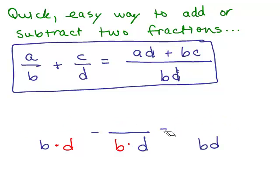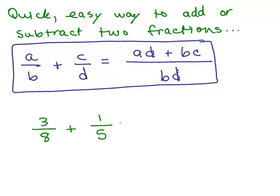So let's look at an example. Let's say you had 3 eighths plus 1 fifth. The new denominator, you simply multiply the two denominators together, which is 40th. And after I do that, I just put the plus sign up on top, because I remember I'm going to add the product of each diagonal. So on the first diagonal, I have 3 times 5, which is 15. And in the second diagonal, I have 8 times 1, which is 8. And so my answer is 23 fortieths.